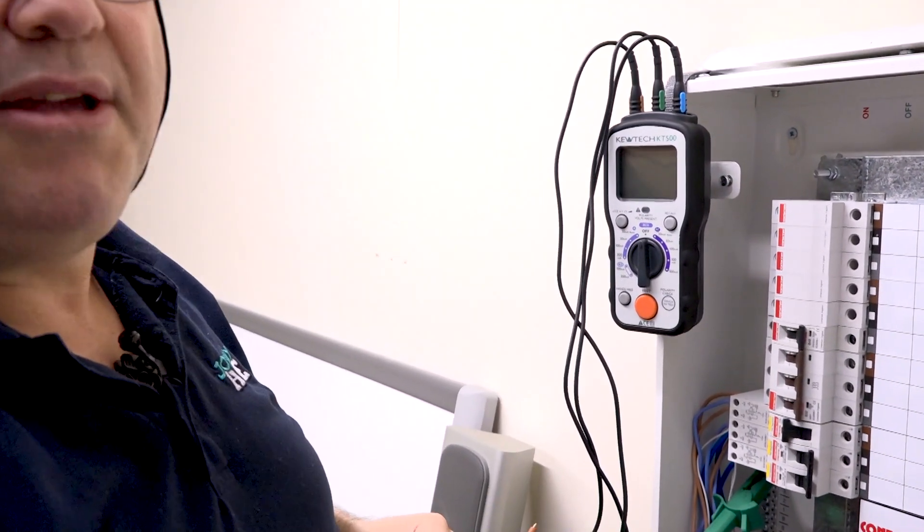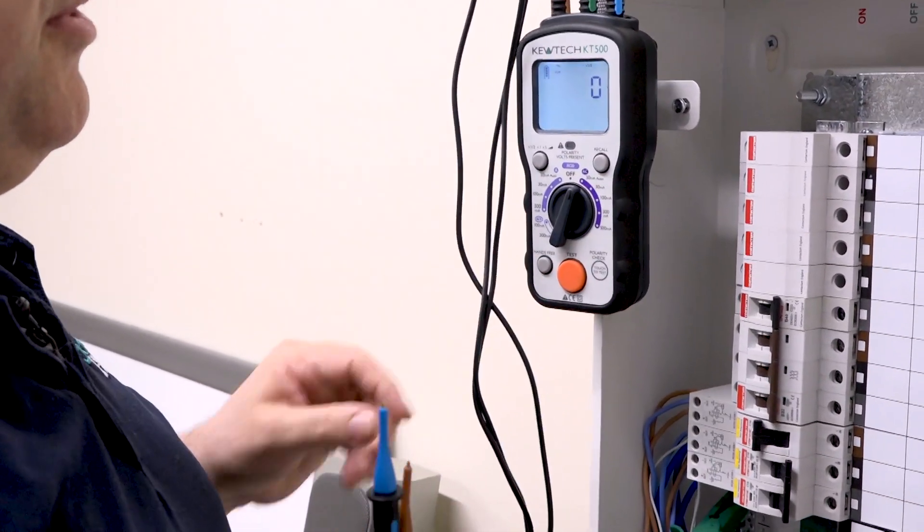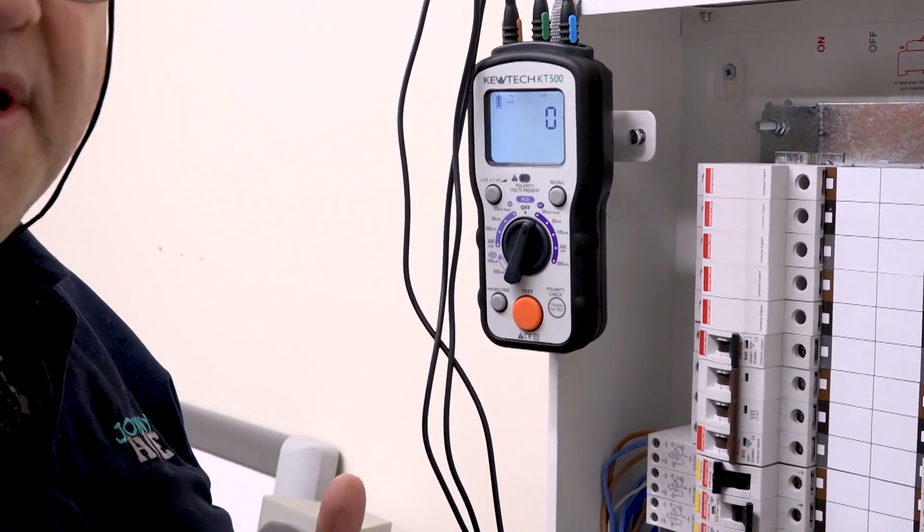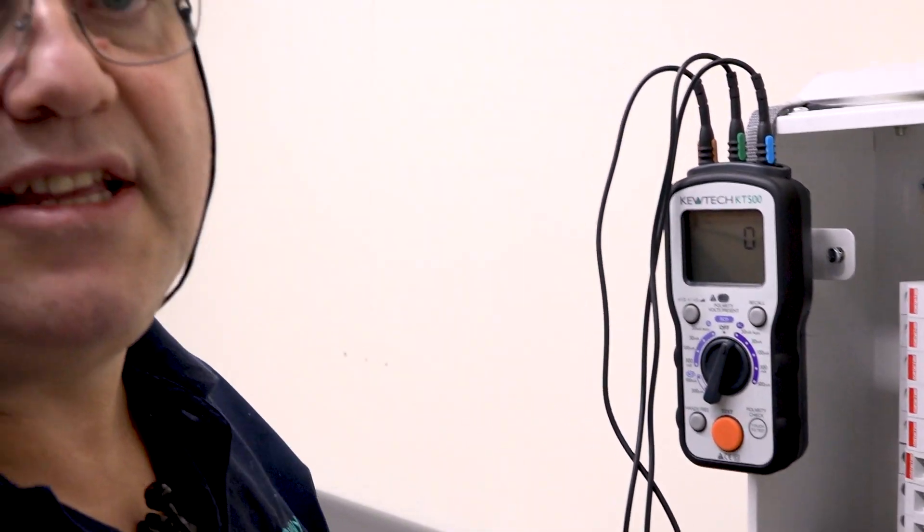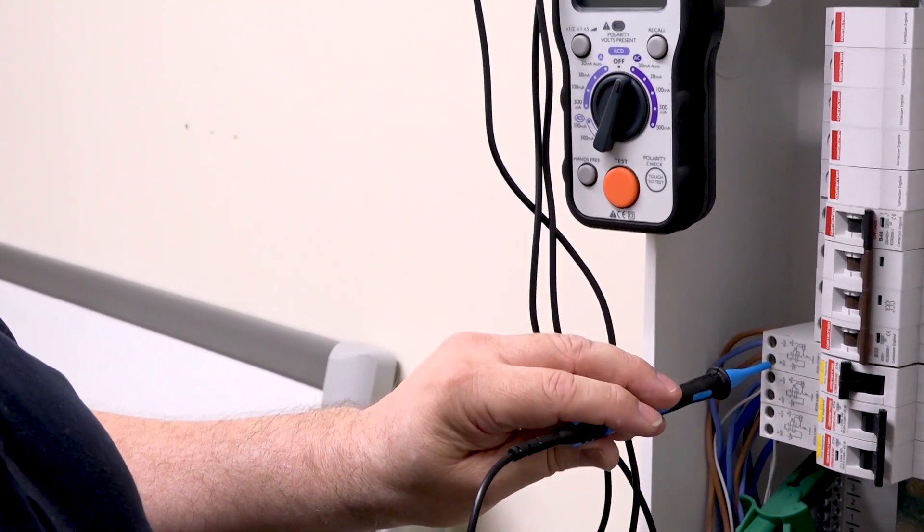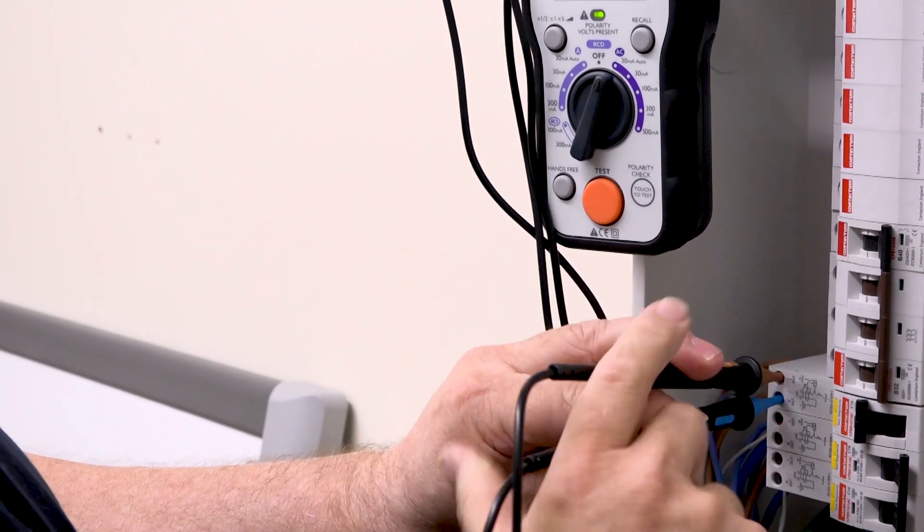As you can see, we've got the earth connection on the DB already. So I'll turn the tester on, put it into AC on the 30 milliamp. Also, all the loads have been disconnected so there's nothing connected into the circuit. The CPC is onto the earth, we'll put the blue probe onto our neutral, brown onto the line.